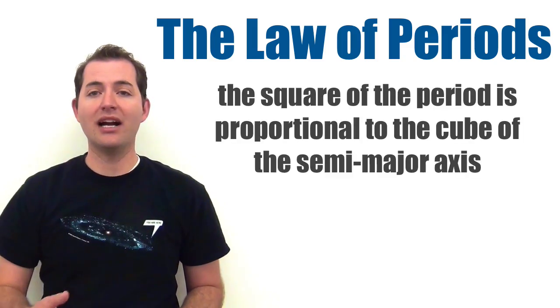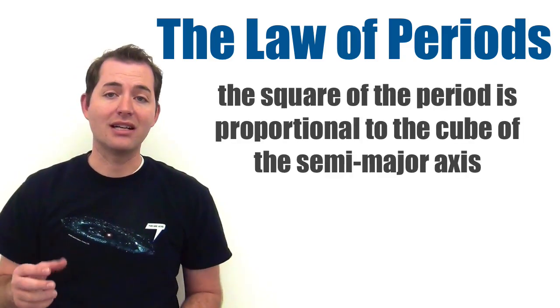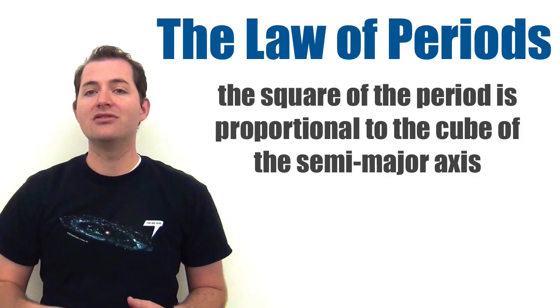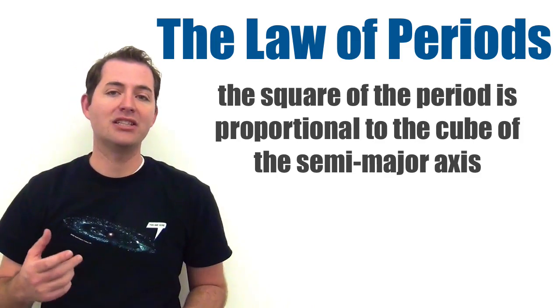Kepler's third law, or the law of periods, says that the square of the planet period, or the time it takes for the planet to orbit the sun, is proportional to the cube of the semi-major axis.